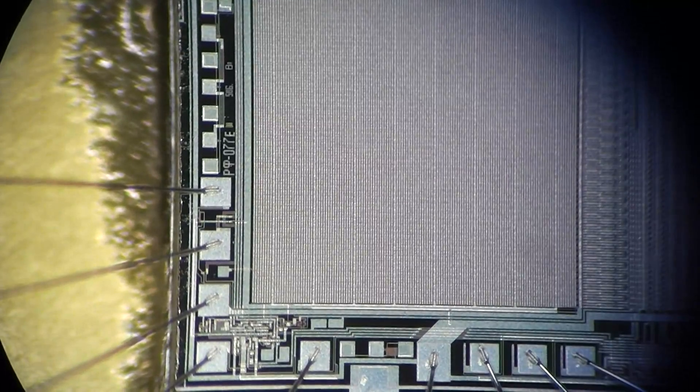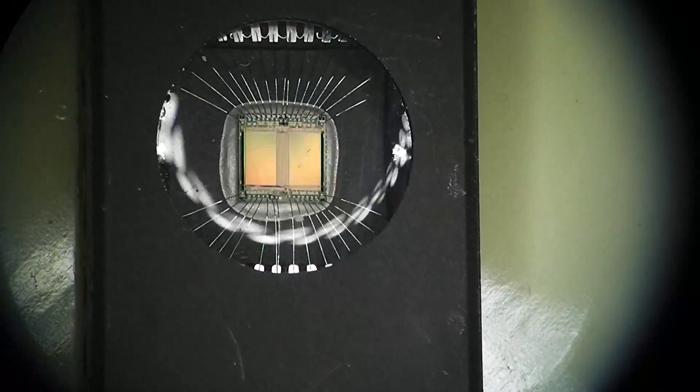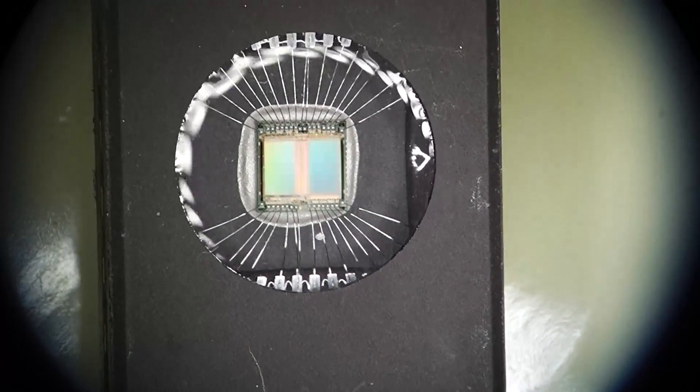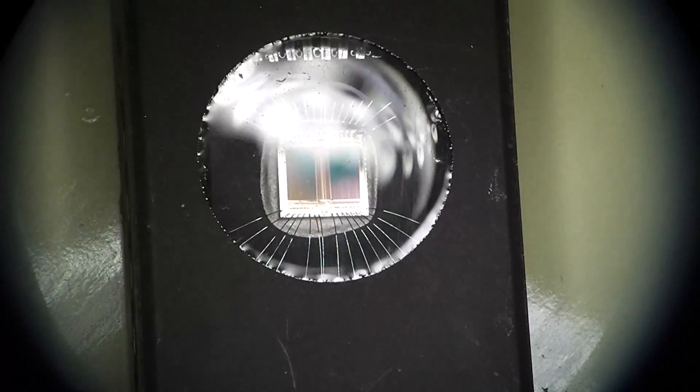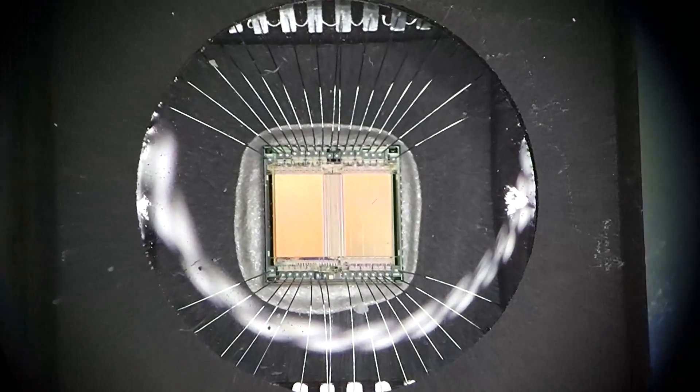Here at the left you can see there's some inscription but I don't know what that is. This is a M27C1001 from STMicroelectronics. You can see the nice colors of the reflection of the die itself.